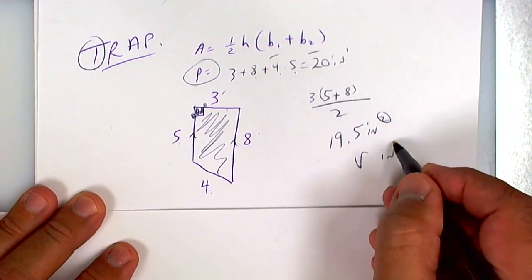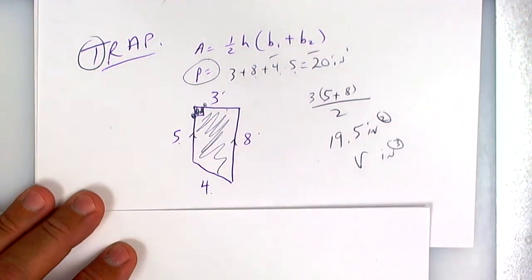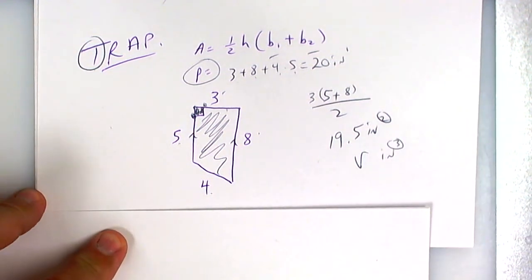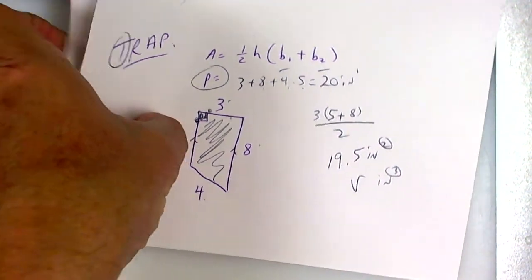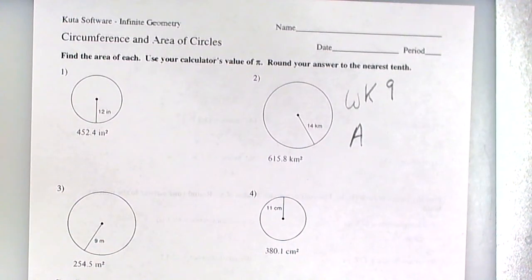Remember, perimeter is one dimension and area is two, and volume is three dimensions. There's only three dimensions that we know of. Some people are still looking for the fourth dimension. Let's talk about today's work. If you cannot be with us today, I hope you're feeling better.